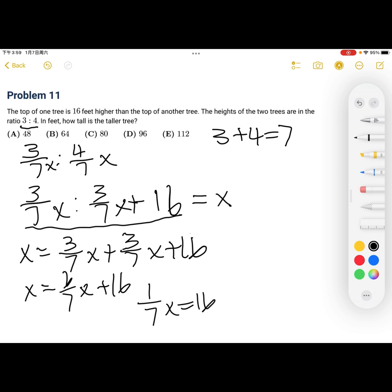Okay. Now, since we're trying to find the height of the taller tree, which is just 4 sevenths x, we can do 4 times 16, which equals 64. And our answer is B.